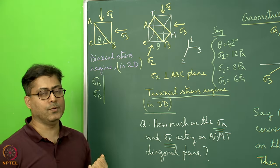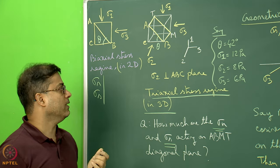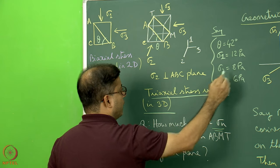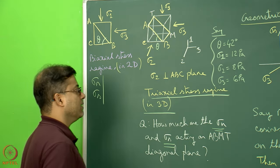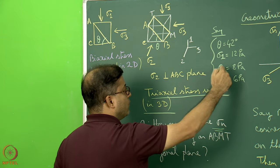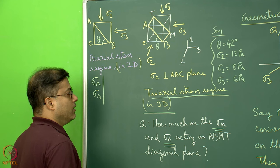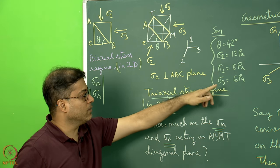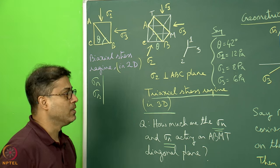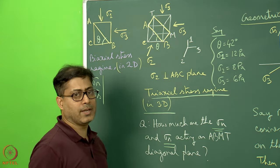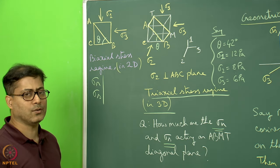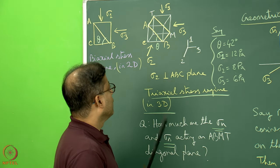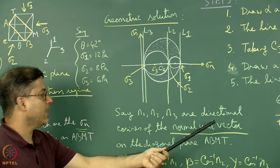Today I am going to give a geometric solution. Take theta = 42°, sigma_1 = 12 Pa, sigma_2 = 8 Pa, sigma_3 = 6 Pa. It is not always required that sigma_1 > sigma_2 > sigma_3; any combination is possible. Theta is the dip of the plane varying from 0° to 90°; here we have an inclined plane.